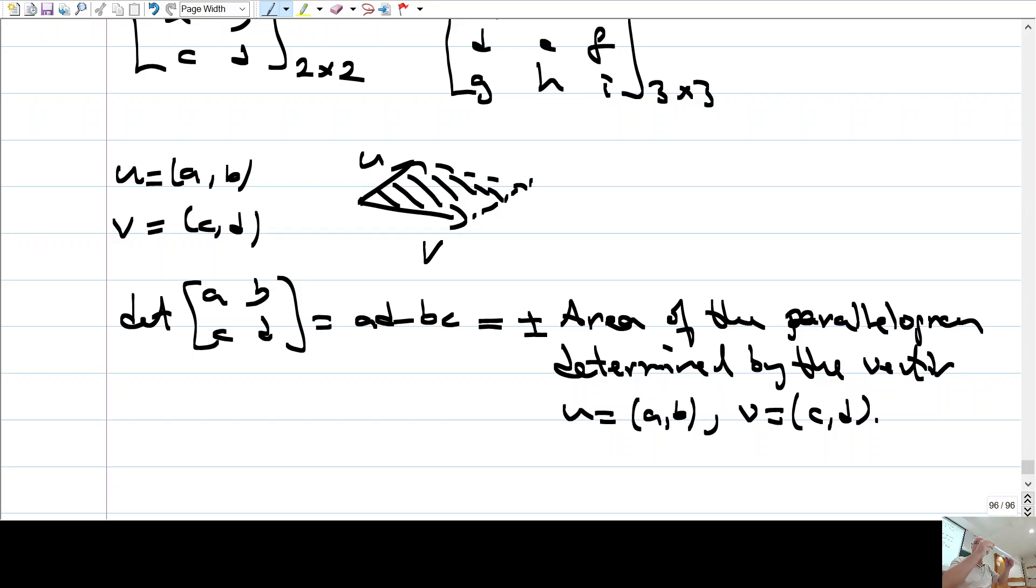Area is important, but it is also important how it sits inside the three space. Is it like this or like this or like this? Okay, that is a vectorial quantity. That's why area is not only actually a scalar, but it should have a sign in it, okay?